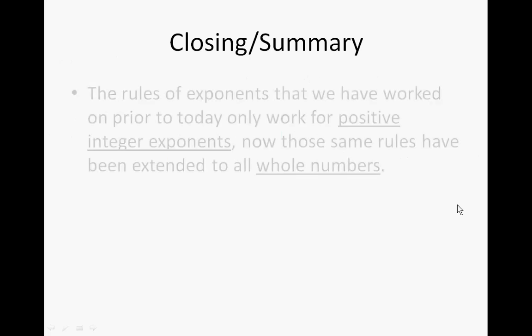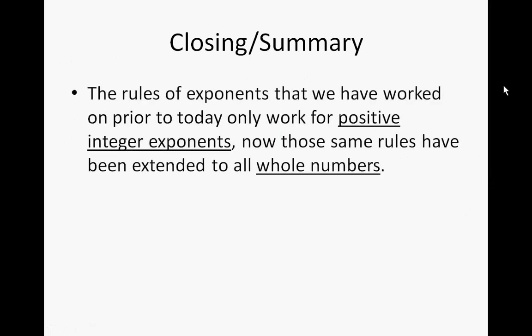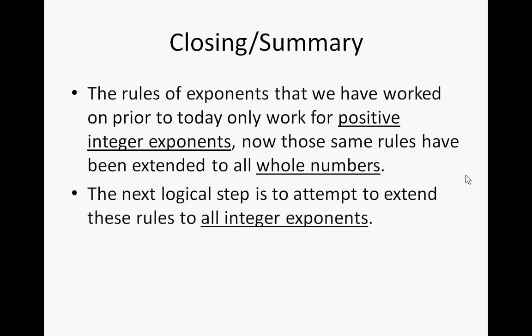Let's wrap this up. The rules of exponents that we worked on prior to today only worked for positive integer exponents — 1, 2, 3, and so on. Now we have shown that we can apply the same rules extended to all whole numbers, because whole numbers include 0. The next logical step, which we'll be doing in a little bit, is to attempt to extend these rules to all integer exponents. Remember that integers include negatives, 0, and positives. We'll see you in class.